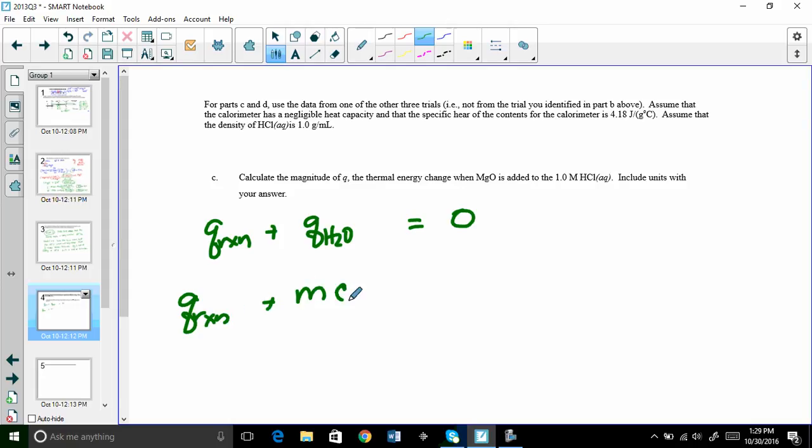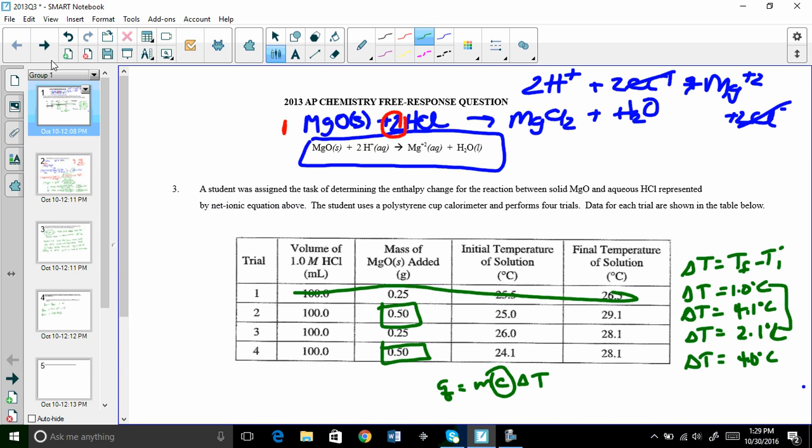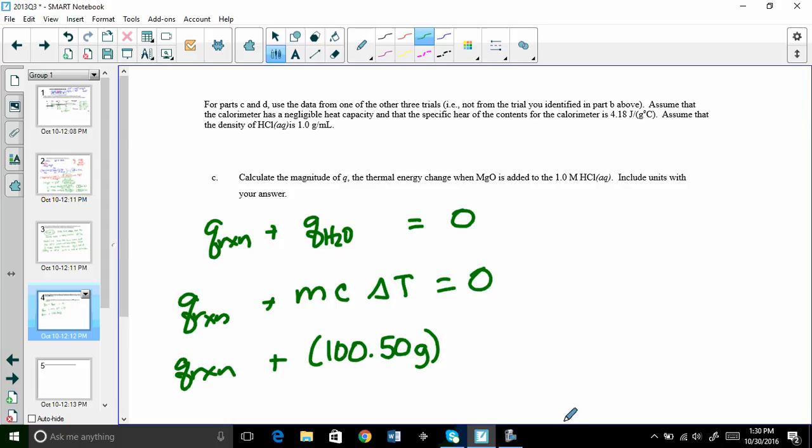For part C and D, use the data from one of the other three trials, not from the trial you identified in part B. Assume that the calorimeter has a negligible heat capacity, which means we don't have to have that little fudge factor in there, and that the specific heat for the calorimeter is 4.18 joules per gram degree C. Assume that the density of water is 1 gram per milliliter. Calculate the Q of the thermal energy. Very interesting on this. Just like your lab, Q of the reaction plus Q of the water equals 0. Q of the reaction plus MC delta T equals 0. Q of the reaction plus, this is interesting, it's 100.50 grams because I decided to use trial 2.